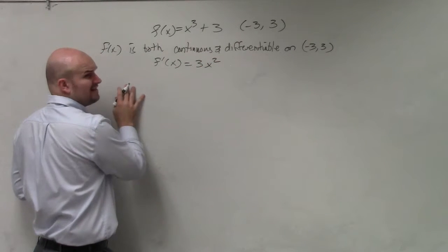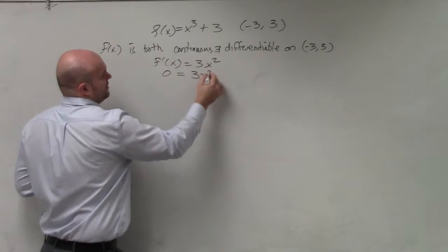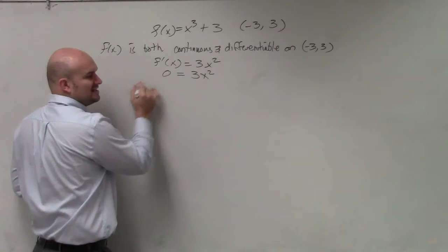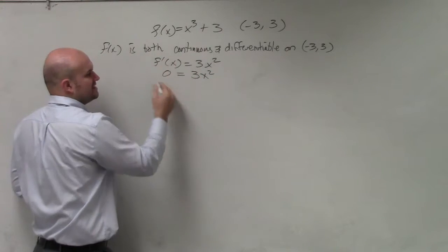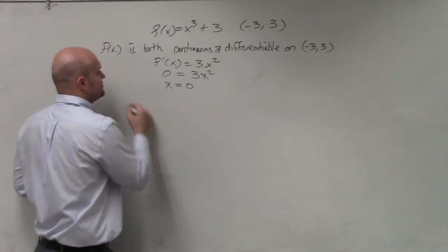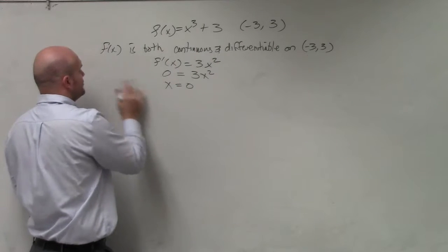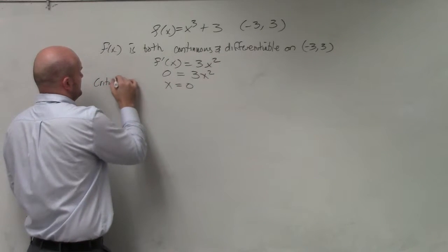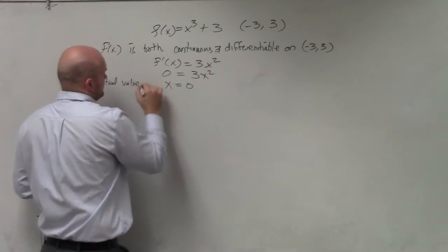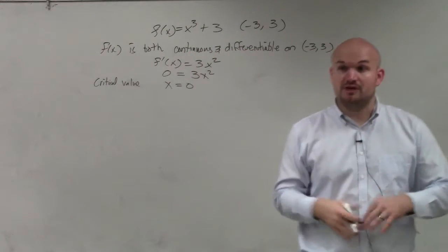I'll go ahead and identify my critical values — set this equal to zero. I'm not going to show any work, but I divide by 3 and then take the square root. So x equals 0 is my critical value.